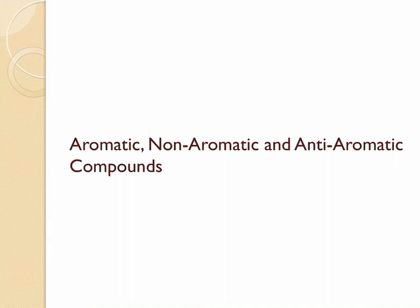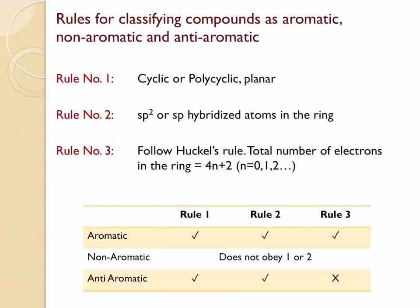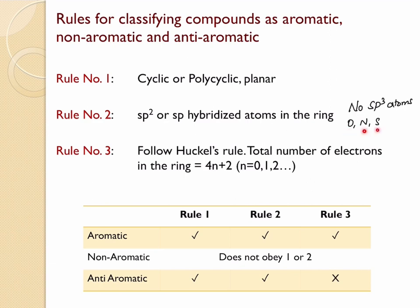Classification of compounds is aromatic, non-aromatic, and anti-aromatic. Here is a set of rules we are going to follow. In order for a compound to be aromatic, first it needs to be cyclic or polycyclic, and that structure should be planar. Second, all atoms within the ring structure should be either sp2 hybridized or sp hybridized — meaning there should not be any sp3 atoms within the ring. Third, the total number of electrons participating in delocalization should be equivalent to 4n+2, which is called Hückel's rule.